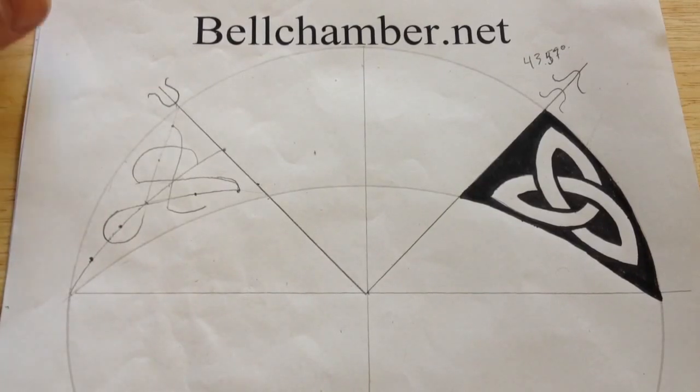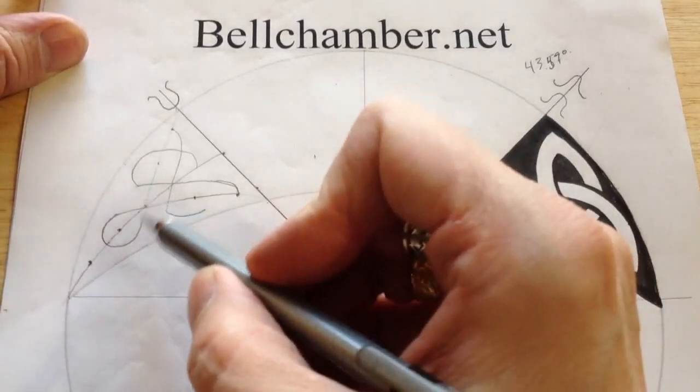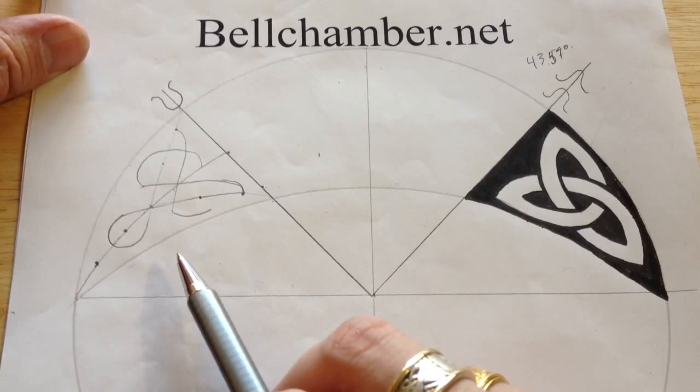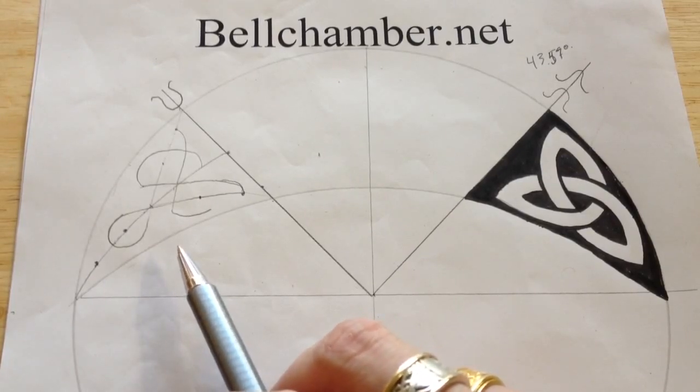But we're going to continue drawing the spine in this part here of our very intricate Triskel knot. And it's the same knot that's found in the roadside cross-slab in Aberlemno in Angus, Scotland.